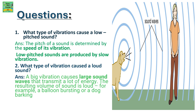What type of vibrations cause a low-pitched sound? The pitch of a sound is determined by the speed of its vibration. Low-pitched sounds are produced by slow vibrations. What type of vibration causes a loud sound? A big vibration causes large sound waves that transmit a lot of energy. The resulting volume of sound is loud — for example, a balloon bursting or a dog barking.